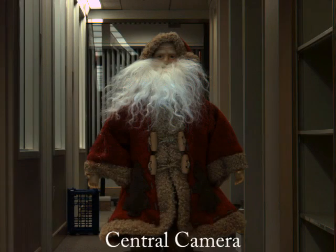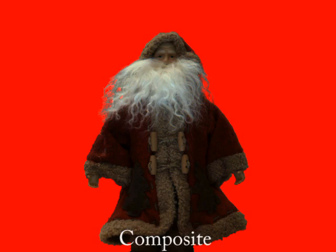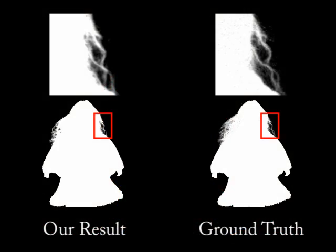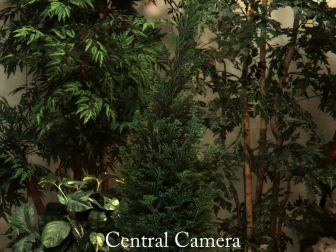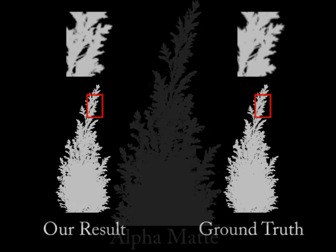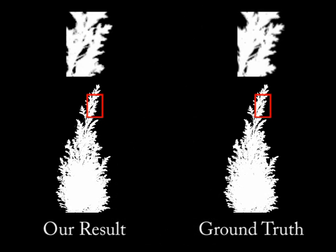We now show results for several static scenes. Here we show the central camera image for a Santa doll filmed in an office corridor. This is the variance image, the tri-map, the alpha-mat, and a composite. Note that our result recovers the same fine hair structure present in the ground truth result. Here we extract an alpha-mat for a tree filmed in front of several other trees. While a single image isn't very revealing, using a camera array, we recover a tri-map and an alpha-mat. Our alpha-mat recovers details such as a single pine needle, also seen in the ground truth alpha-mat.